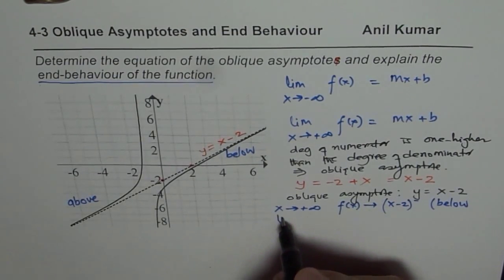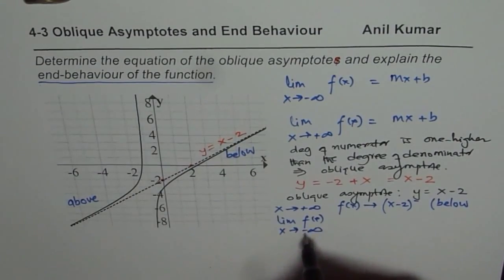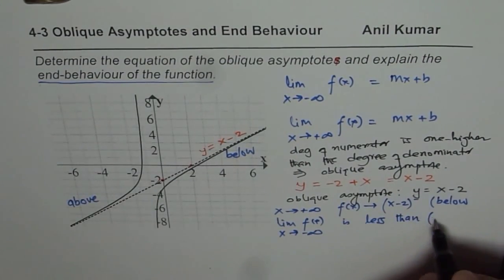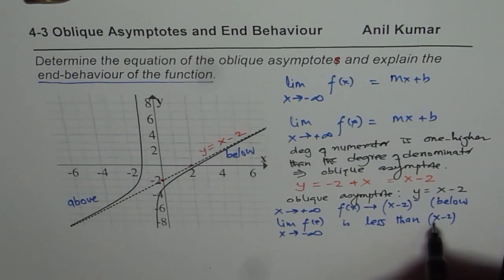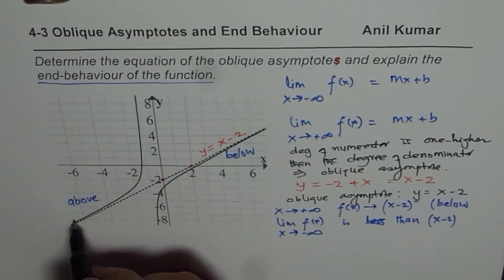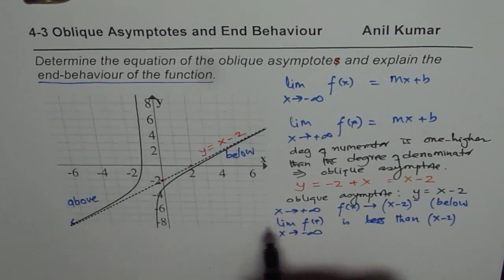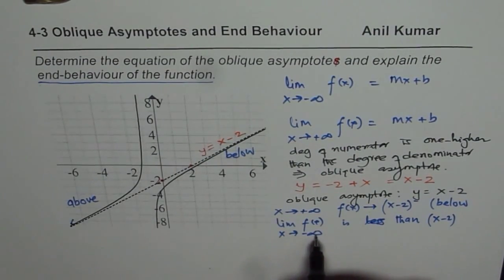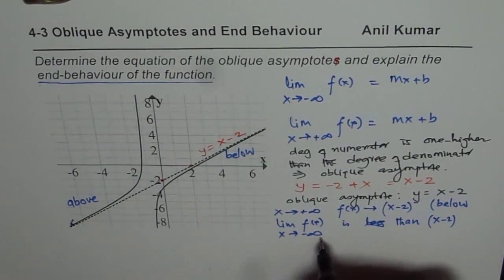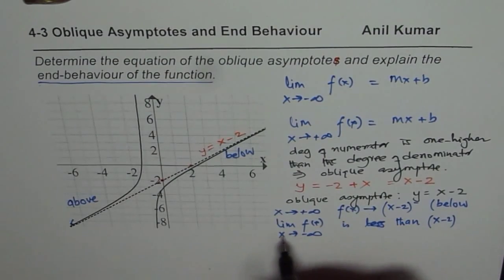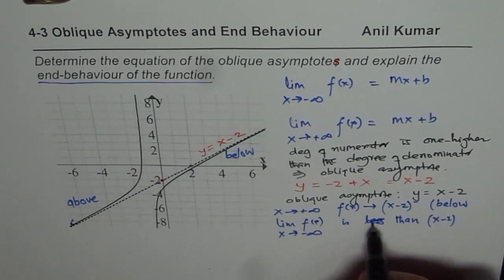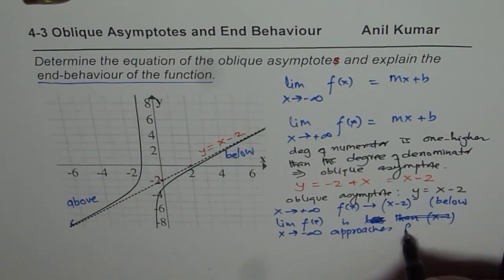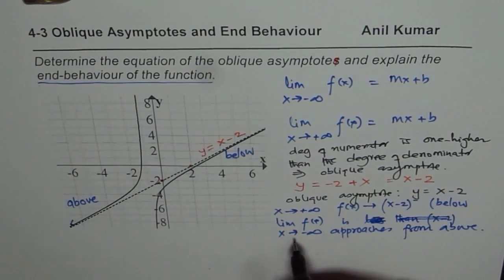When x approaches minus infinity, the function approaches the line x minus 2, and in this case it is more than the line — slightly above it. So when approaching minus infinity, the value of the function is slightly more than the asymptote. We can say the function f of x approaches from above as x approaches minus infinity.